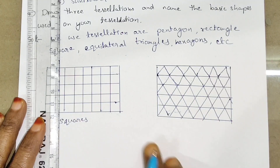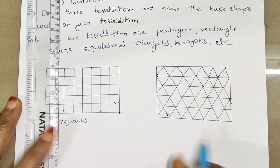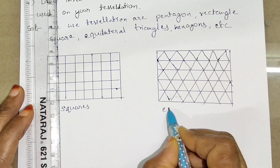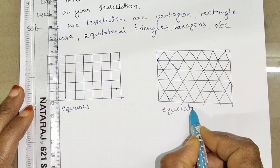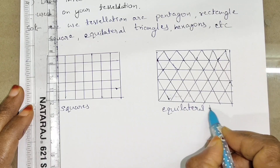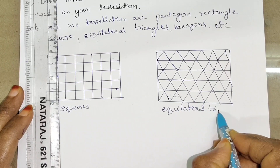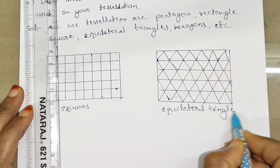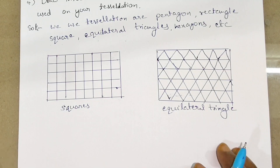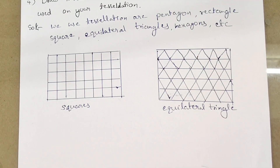These are all the triangle shapes — equilateral triangles. We use equilateral triangle shapes to draw tessellation patterns. Use any shape and draw it.